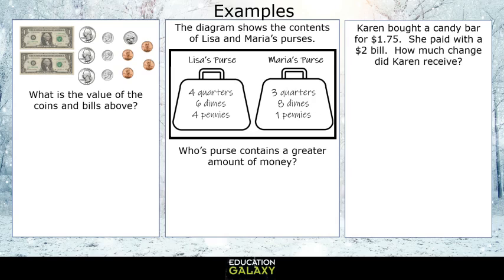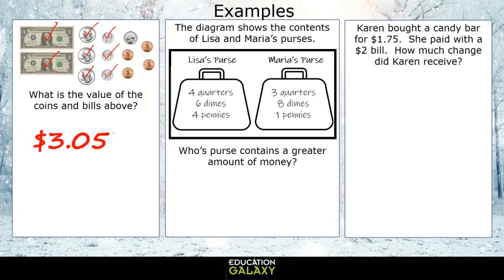Let's check out these examples. The first one says: what is the value of the coins and bills above? We have three quarters, and three quarters is seventy-five cents. Plus a dime is another ten cents — that's eighty-five. Another dime is ninety-five. And another one would be three dollars five cents. Then we have a nickel, so that adds five — three dollars ten cents. And then the pennies: three dollars eleven cents, three dollars twelve cents, three dollars thirteen cents, three dollars and fourteen cents.